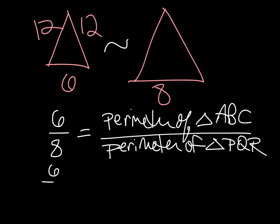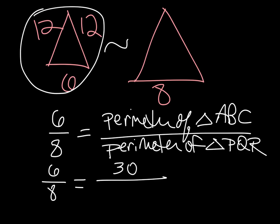So 6 over 8 is equal to the perimeter of the first triangle, which is 12 and 12 is 24 plus 6 is 30, over the perimeter, let's just call it P for perimeter of the second triangle.